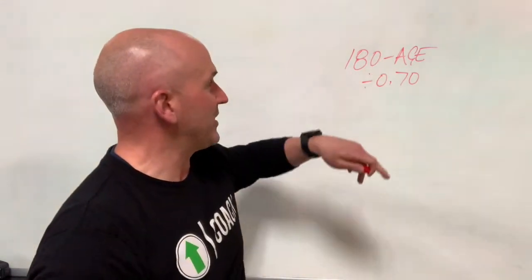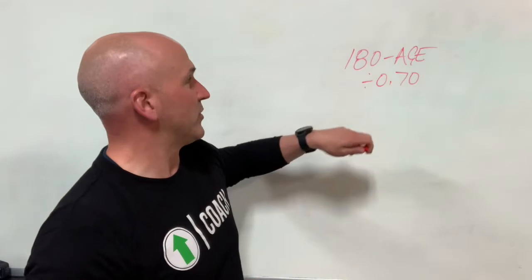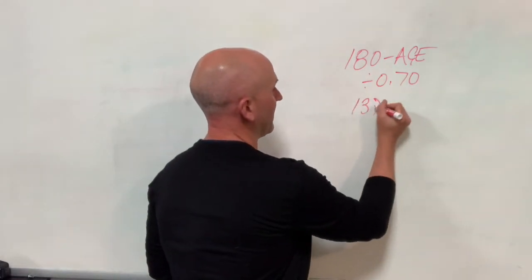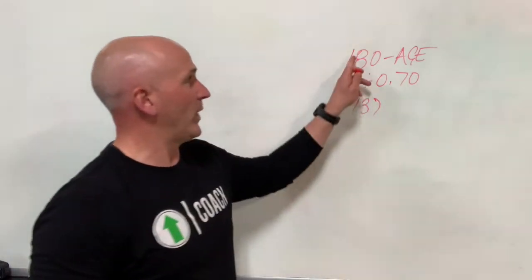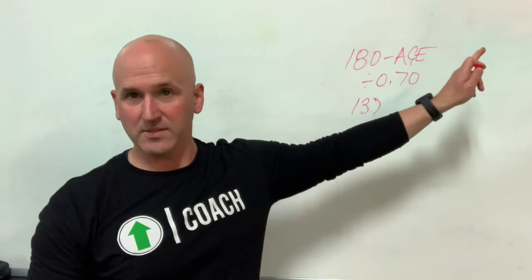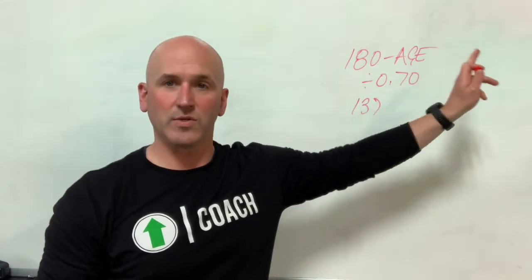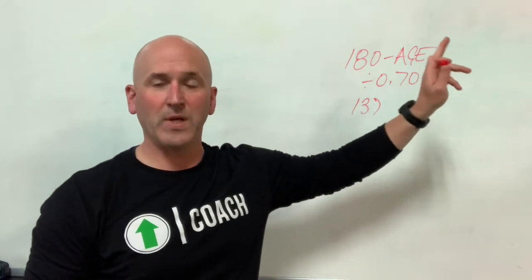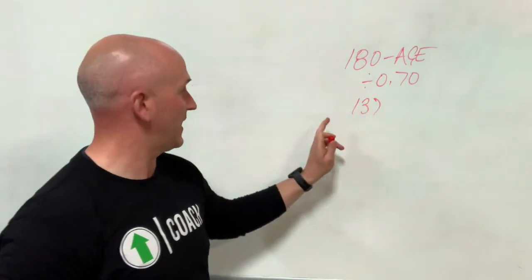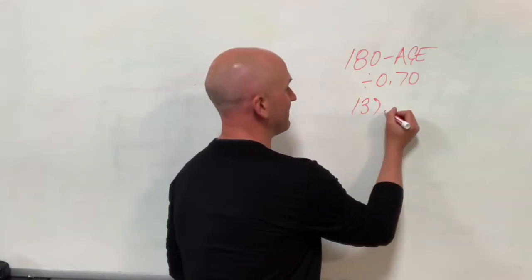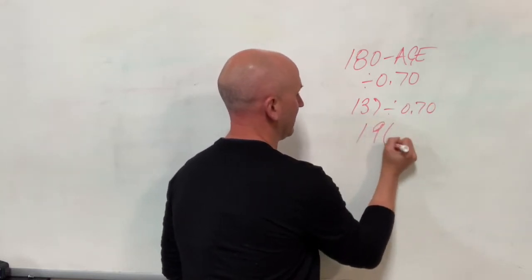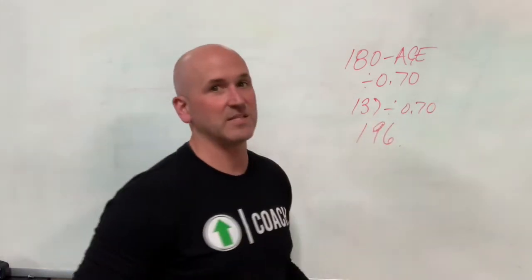So if I take my age — I'm 43 years old — 180 minus my age gives me 137 beats per minute. 180 minus my age on its own gives me my high end for my theoretical zone 2. We don't need that right now, but what we do need is max heart rate. So we take 137 divided by 0.7, and that gives me a max heart rate of 196 beats per minute.